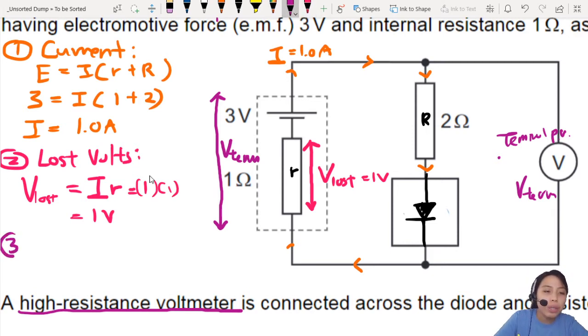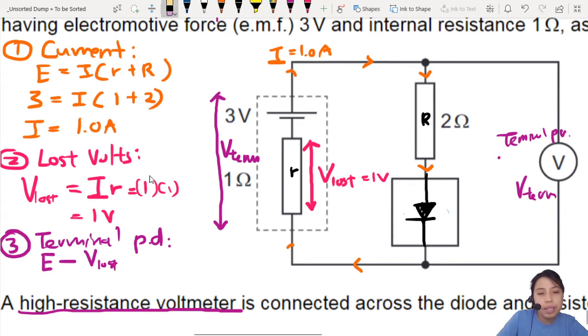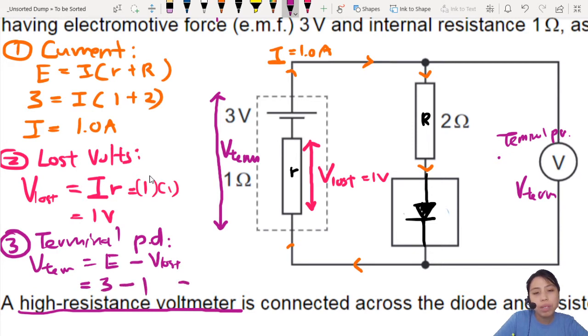Very nice. Now I can do the third step. So if I know how much I lost, I can calculate the terminal potential difference. Which will be the EMF minus what I lost. So terminal potential difference. So V terminal will be EMF minus whatever you lost inside the battery. See the dotted line is all inside the battery. So this will be 3 volts minus 1 volt equals 2. 3 minus 1 equals 2.